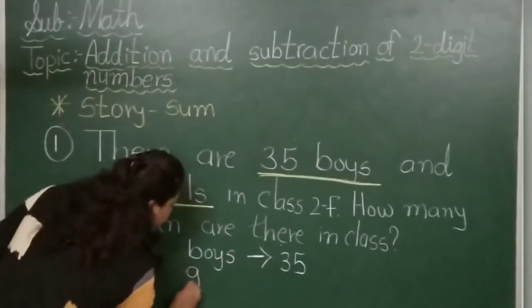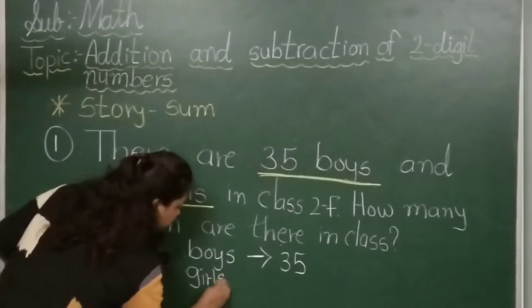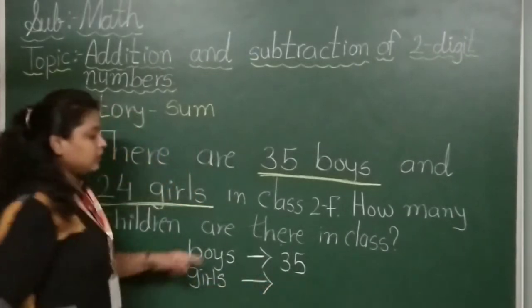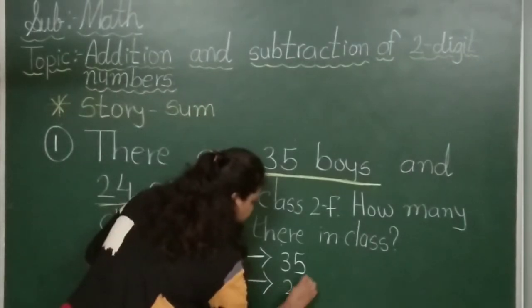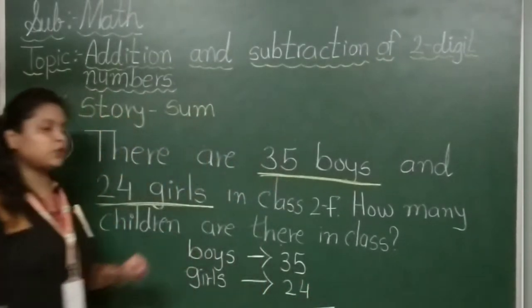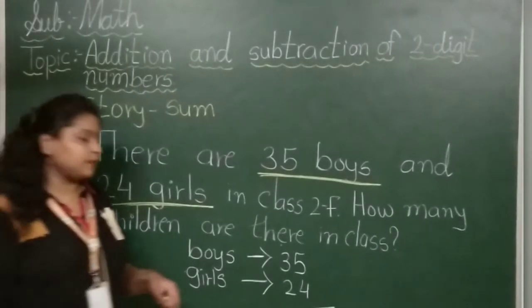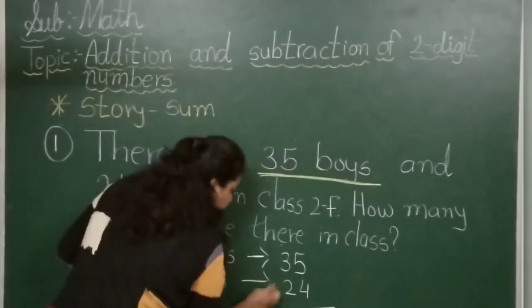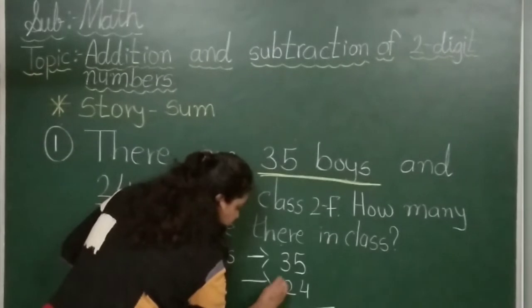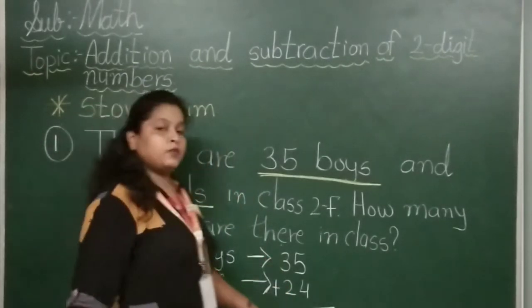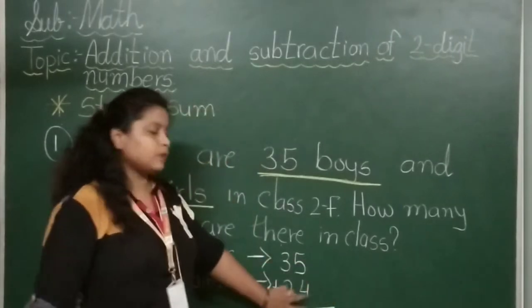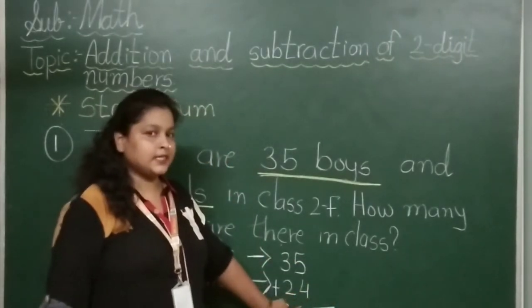Next, girls. How many girls are here? 24, twenty-four. How many total? How many children are in class? So what do we do here? Addition. As we learned, ones first, then tens.